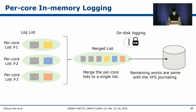We also found contention on the global journaling state protected by an exclusive lock. To resolve this, we propose stride space counting, a variant of the sloppy counter. Please read our paper for more information.